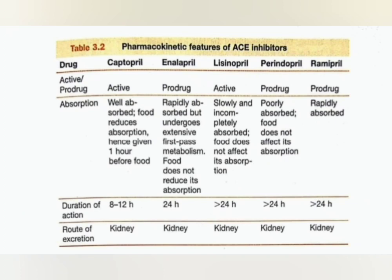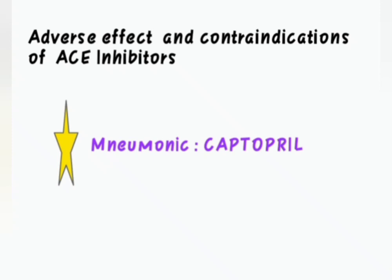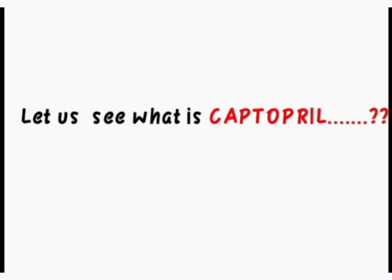Pharmacokinetics: ACE inhibitors are usually given orally. They poorly cross the blood-brain barrier and are metabolized in the liver and excreted in urine. In hypertensive emergencies, enalaprilat is given intravenously. Food reduces the absorption of captopril, hence it should be given one hour before a meal.